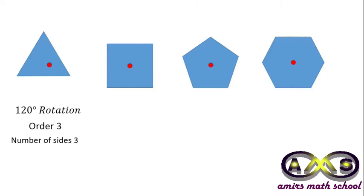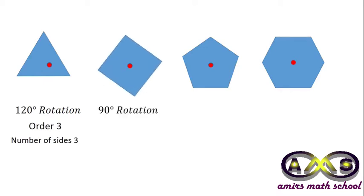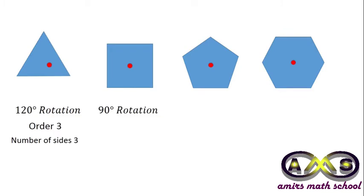And we all know the number of sides for an equilateral triangle is 3. For a square, after 90 degree rotation, it became identical with the initial position. So, 360 divided by 90 gives square a rotational symmetry of order 4. And we all know a square has 4 sides.